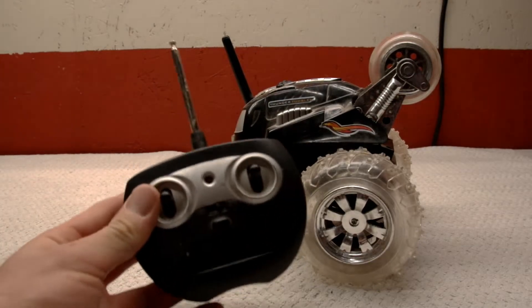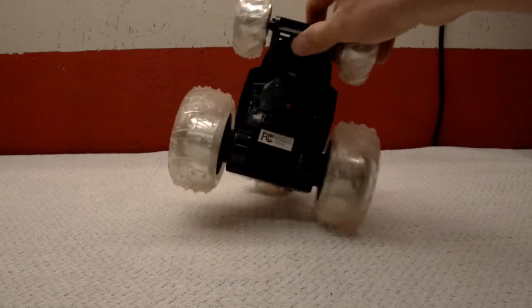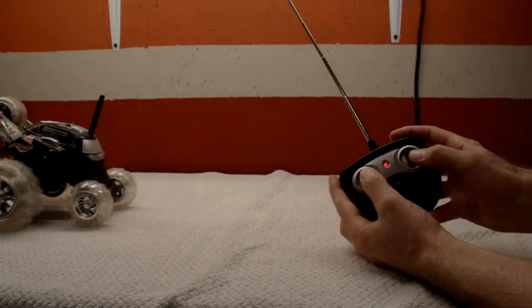Today we are going to try and convert this two-channel RC car into a two-channel RC paddleboat. There are two independent motors, each on its own channel, that drive the rear wheels.